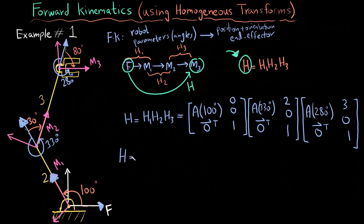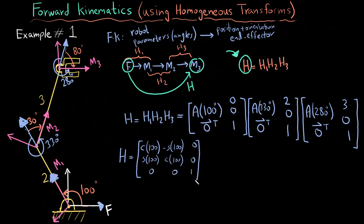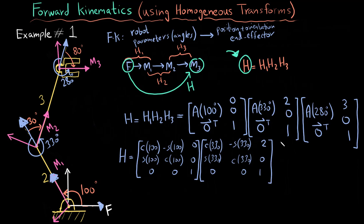Writing out the expanded matrix forms: H1 is [cos(100°), sin(100°), 0 / −sin(100°), cos(100°), 0 / 0, 0, 1]. H2 is [cos(330°), sin(330°), 2 / −sin(330°), cos(330°), 0 / 0, 0, 1]. H3 is similarly [cos(280°), sin(280°), 3 / −sin(280°), cos(280°), 0 / 0, 0, 1].